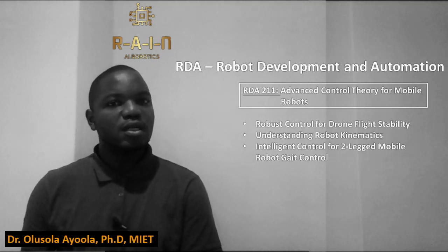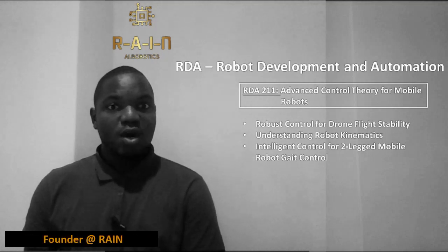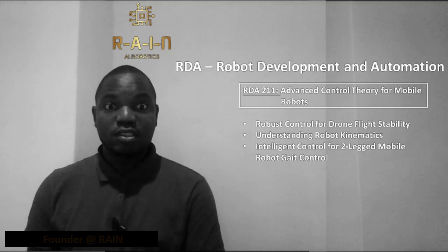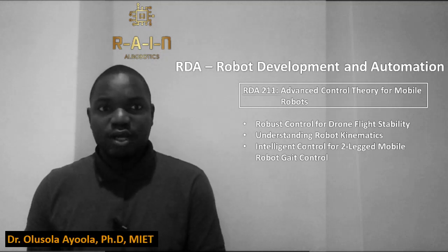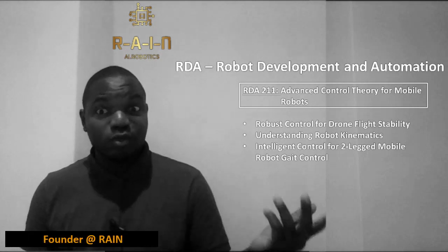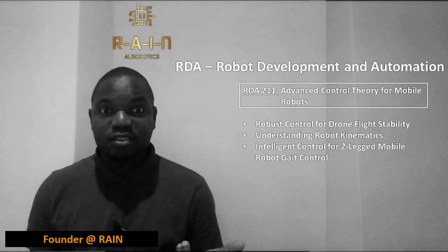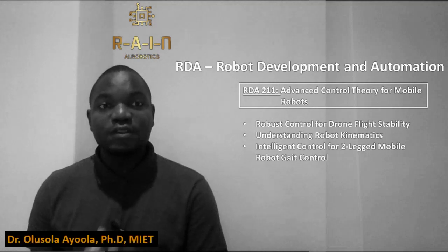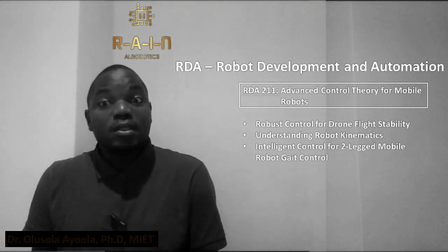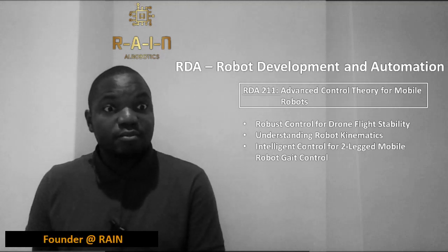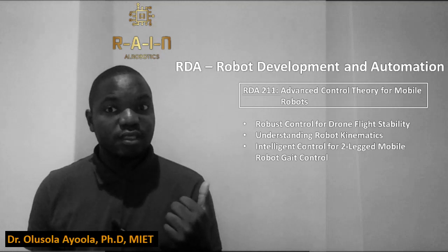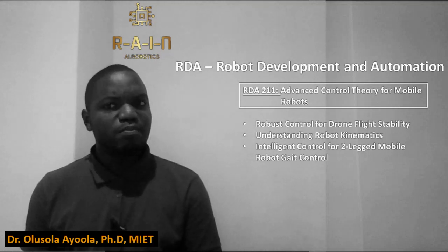RDA 211 begins in the second semester. Controlling a very dynamic robot such as an intelligent drone or a mobile robot is not straightforward. When a robot becomes exposed to our ever-changing environmental conditions, the robustness of the control algorithm comes into question. That's why a robot developer is required to be armed with the skills we provide in this course, which covers advanced control theory, robot kinematics and motion planning.